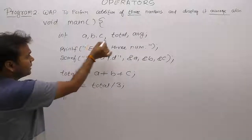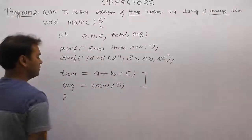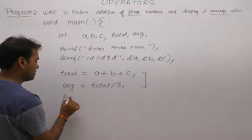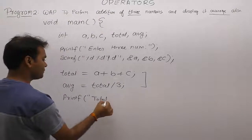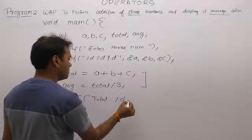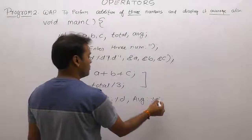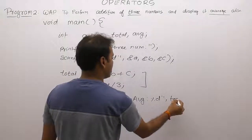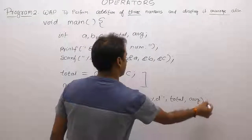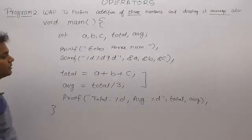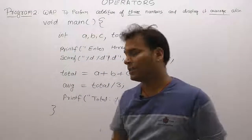Then finally displaying results — declaring required variables, reading inputs from keyboard, applying processing logic, then displaying results. There are two results: total and average. Display using percent d for total and percent d for average, then the values of the total and average variables. That's the operation to perform sum of three numbers and its average.